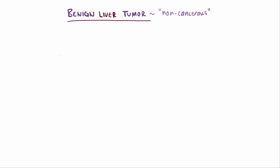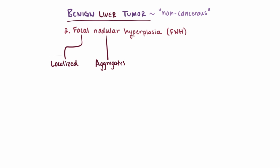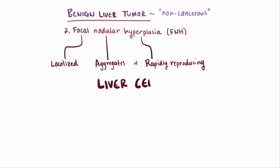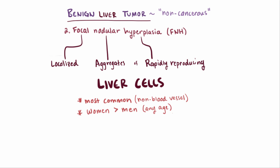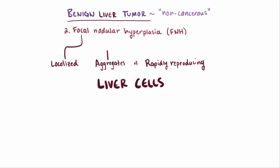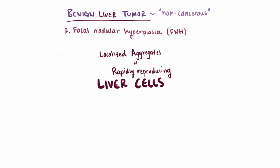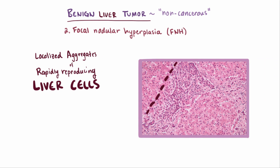The second most common type of benign liver tumor is a focal nodular hyperplasia, or FNH. These are localized aggregates of rapidly reproducing liver cells. FNH is actually the most common non-blood vessel related benign tumor in the liver, and is seen slightly more in women than in men, but can happen at any age. This is a loosely used term to describe when nodules or aggregations of seemingly benign hepatocytes are found in the liver.